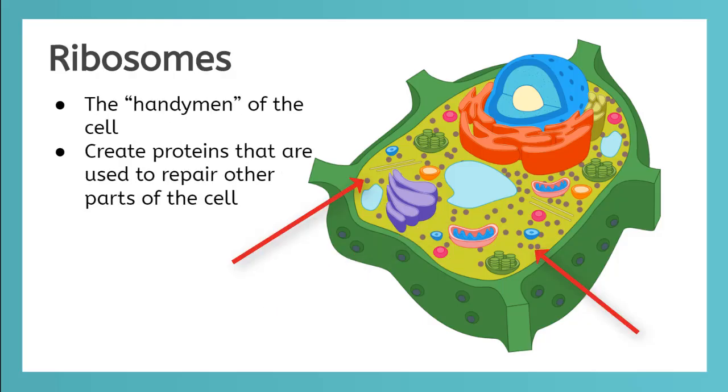The brown polka dots floating in the cytoplasm are ribosomes. They act as the handyman of the cell and produce specific proteins that are used to repair other parts of the cell.